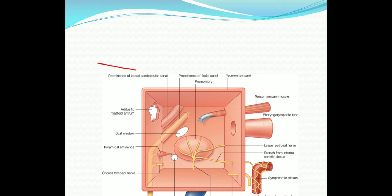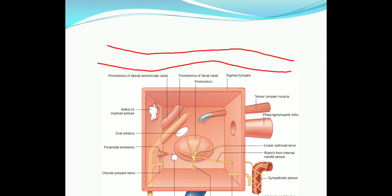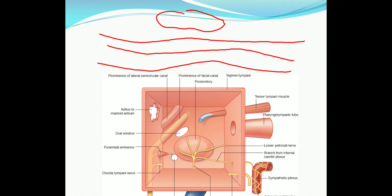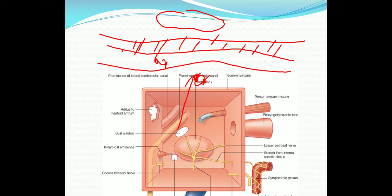Imagine this is the dura, this is the arachnoid, this is the pia, and this is the brain matter. If there is a collection between the bone and dura, it is called extradural abscess. If there is a collection between the dura and arachnoid, it is called subdural abscess. If there is inflammation of the leptomeninges — that is the arachnoid and pia matter — it is called meningitis. If there is pus collection inside the brain, it is called brain abscess.